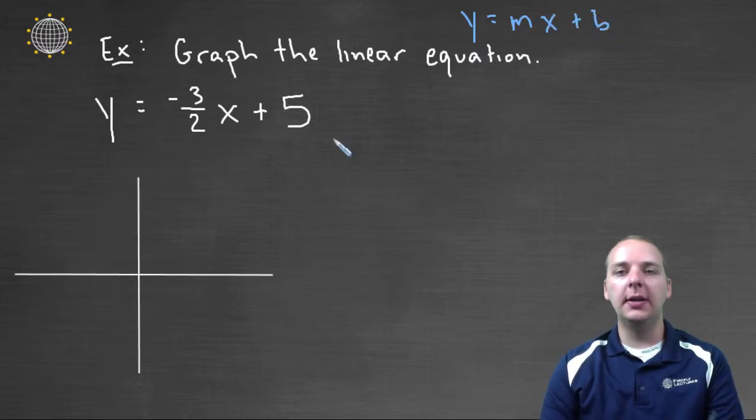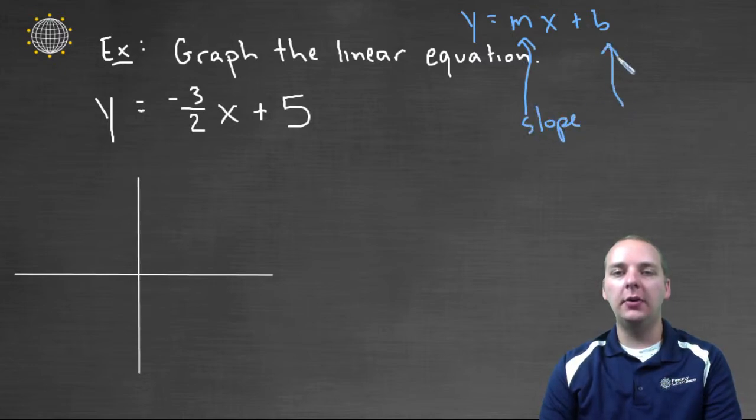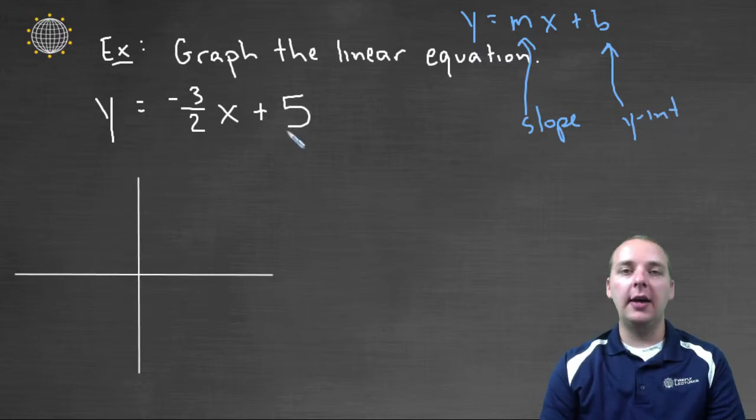Which is the form ours is written in, where the m tells you the slope of the line, and the b-value tells you the y-intercept of the line. And so for our line, five is the y-intercept, and negative three-halves is the slope, or the tilt of the line.